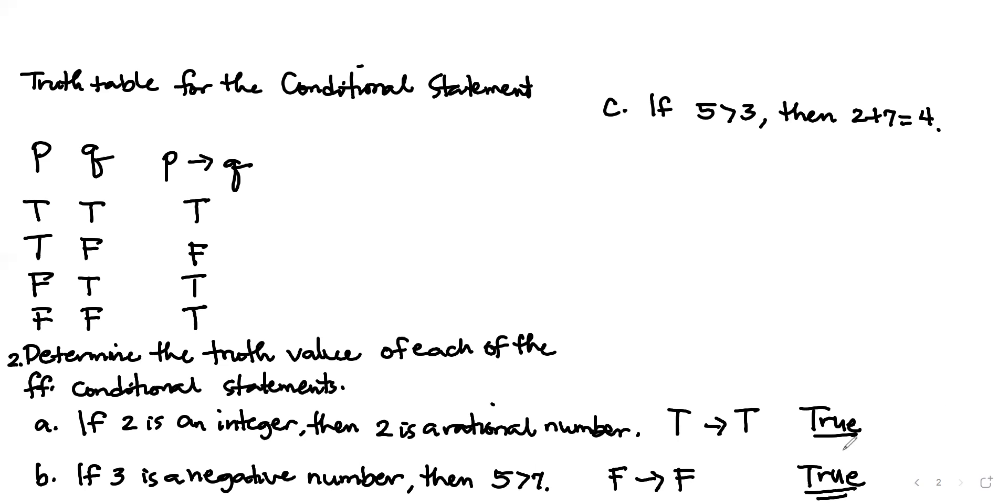Next letter C: if five is greater than three, then two plus seven equals four. Five is greater than three, the answer is true. The consequent, two plus seven equals four, is a false statement. Obviously, it's a false statement. Since our consequent is false, therefore the truth value for letter C is false. It's a false statement. Letter C is wrong.